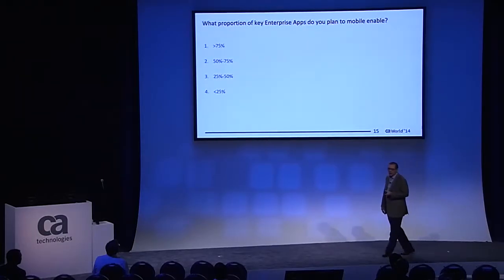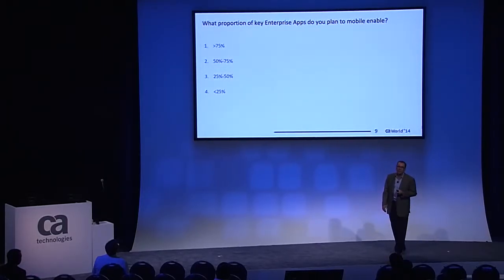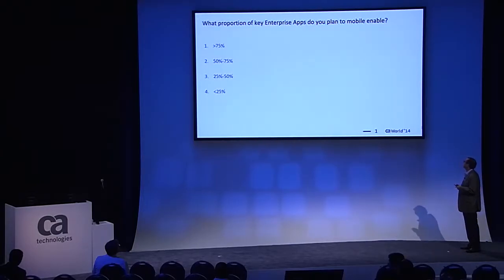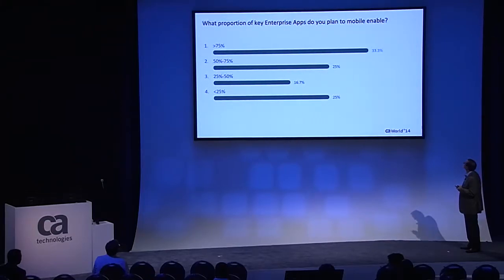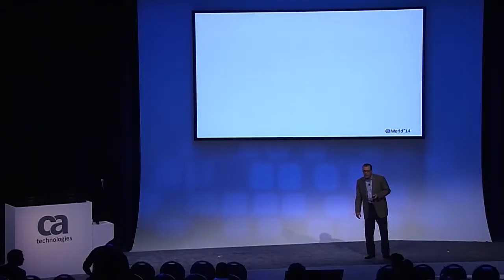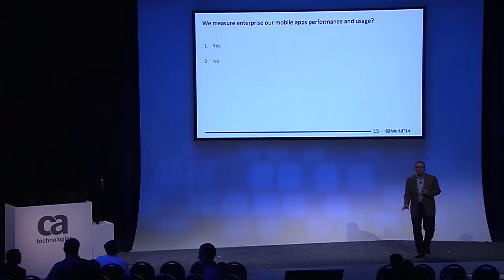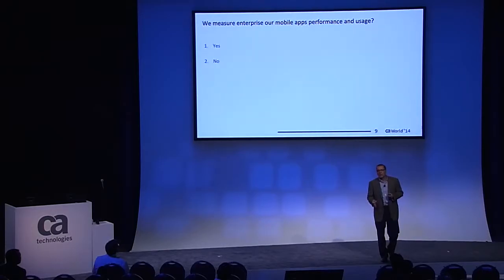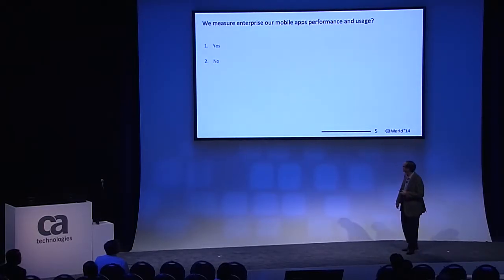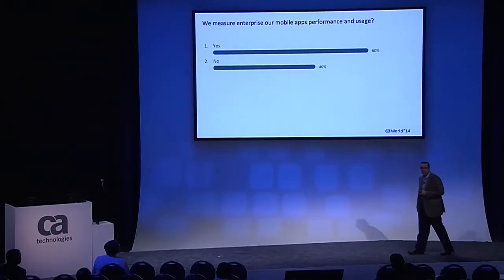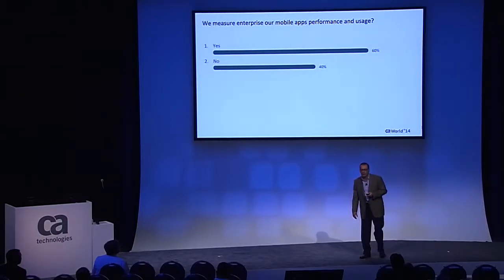Our third question has to do with what percentage of your enterprise apps you're trying to expose on a mobile platform — more than 75%, 50 to 75%, less than 25%, et cetera. And lastly, to the extent that you have mobile applications deployed in your enterprise, are you measuring things like usage, performance, crash analytics, and user experience? That's impressive — I didn't think there would be this many doing that, but good job.